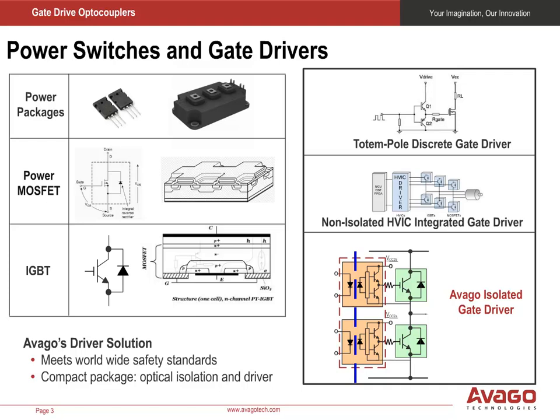How the designer handles the charging and discharging of the gate capacitor determines how fast these power devices turn on or off. The most commonly used charge and discharge circuit is the totem pole transistor pair. Q1 turns on to charge the gate capacitance and to turn the power MOSFET on. Q2 turns on to discharge the gate capacitance and turn the MOSFET off.